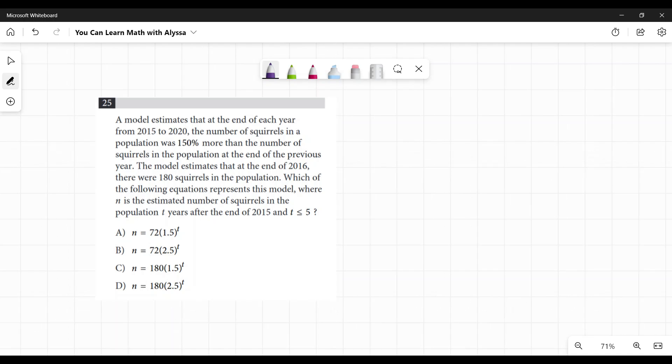When it says a model estimates, this is not talking about runway models. This is talking about a mathematical model. So 2015 to 2020, and they're giving us the number in 2016. It says at the end of 2016, there were 180 squirrels and also says the population is 150% more than the number of squirrels at the end of the previous year.